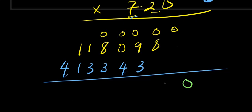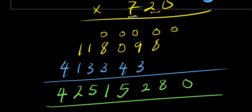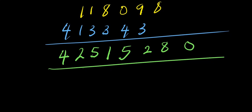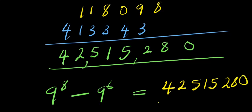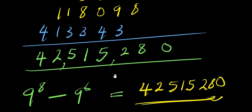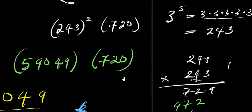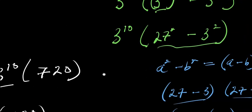Adding up all the partial products together: 0, then 8, then carrying through the columns — 2 carry 1 gives 5, then 1 carry 1 gives 5, then 2, then 4. At the end we simply have 42,515,280. So 9 to the power of 8 minus 9 to the power of 6 equals 42,515,280, and we have been able to achieve this without a calculator. If you enjoyed this video please don't forget to subscribe and share. Thank you and see you again!